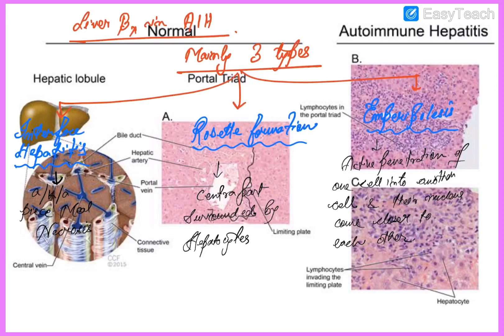Number one is interface hepatitis, also known as piecemeal necrosis. Here, lymphocytes invade the limiting plate of hepatocytes and gradually reach the central region. Number two is rosette formation, where a central part is surrounded by hepatocytes. Number three is emperipolesis, which is the active penetration of one cell into another cell, where the nuclei come closer to each other.